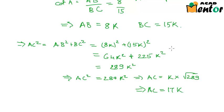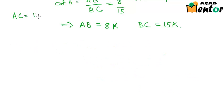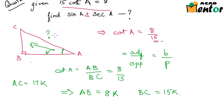Let me just erase out this calculation for you. So we have AC as 17K. If we go back to our figure here, we have this value as 17K, AB as 8K, and BC as 15K.